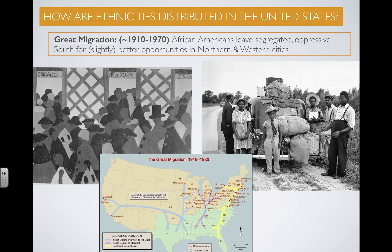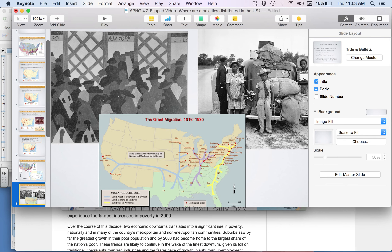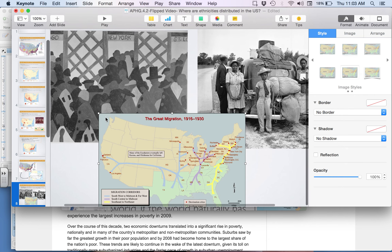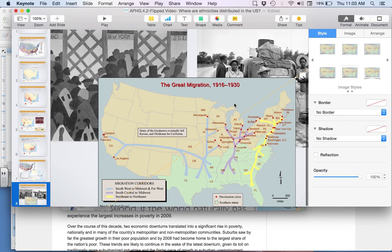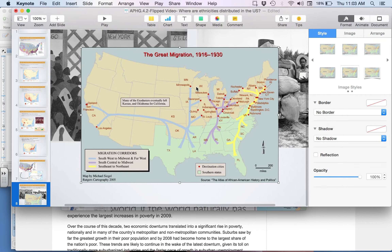This is when African Americans were leaving en masse. They were leaving the segregated and oppressive South for slightly — and I use that term liberally — slightly better opportunities and better access to equality in northern and western cities. A lot of people forget about the West, so please don't forget about that. This map does a nice job of showing some of these major routes for the Great Migration.